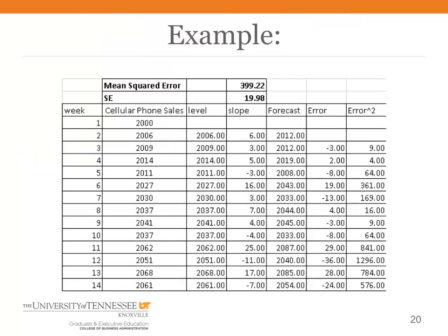Here is an example table where each week we compute the level, compute the slope, and then make the forecast. We compare what actually happened each week to what we forecast the previous week to get an error, then square the error. We take the entire data set and compute the mean of the squared errors, then take the square root to get the standard error.